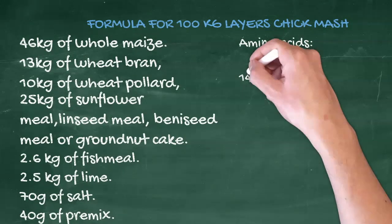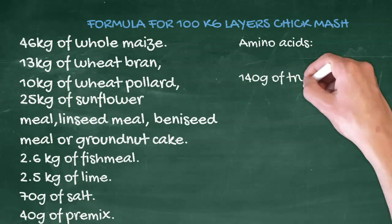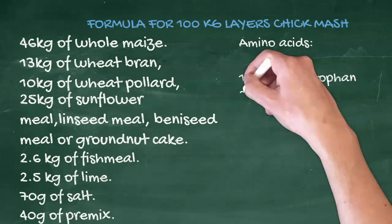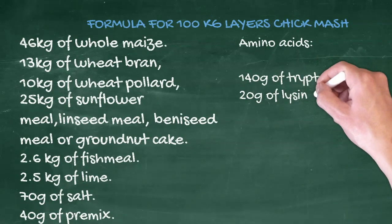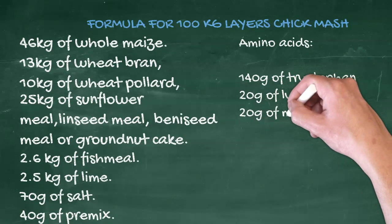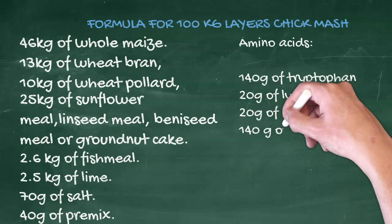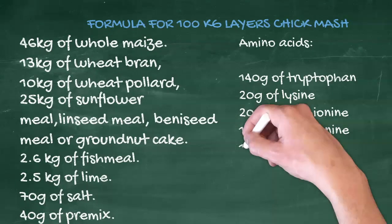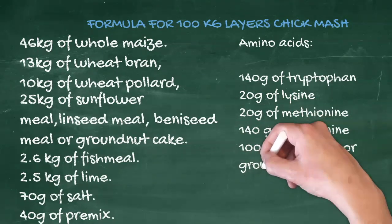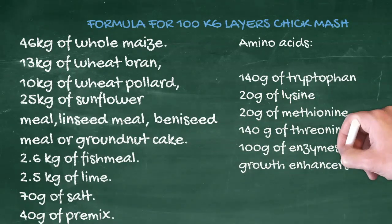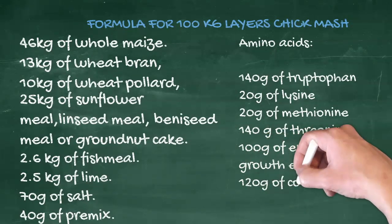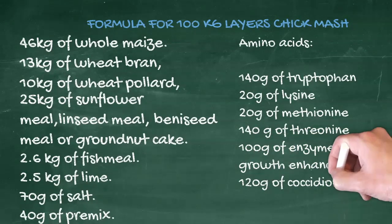Amino acids to be added: 140 g of tryptophan, 20 g of lysine, 20 g of methionine, 140 g of threonine, 140 g of enzymes or growth enhancers, 120 g of coccidiastat, 100 g of toxin binder.